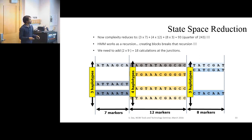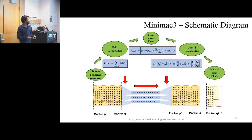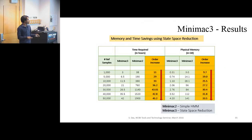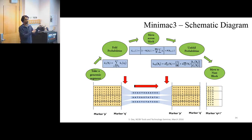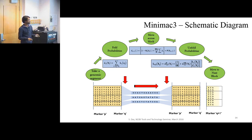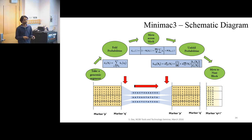In MiniMac3 we take a segment, find the unique haplotypes — for example ending up with only 3 main unique haplotypes — then fold the probabilities to work in the reduced space, implement the HMM recursion across only those unique haplotypes, and once we reach the end position we unfold them back to the original space. Then we move on to the next block, keeping the process working as a recursion throughout.